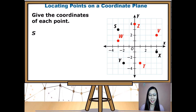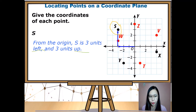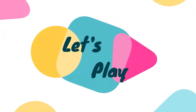For point S, located in Quadrant 2: from the origin, S is three units left and three units up. The clue words are 'left' and 'up' — left is negative and up is positive, so the coordinates of S are (-3, 3).